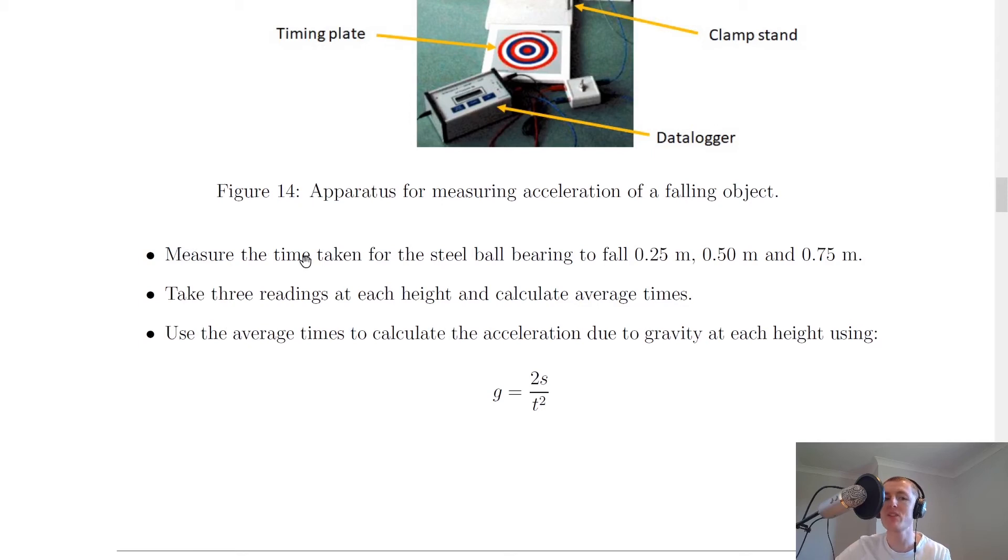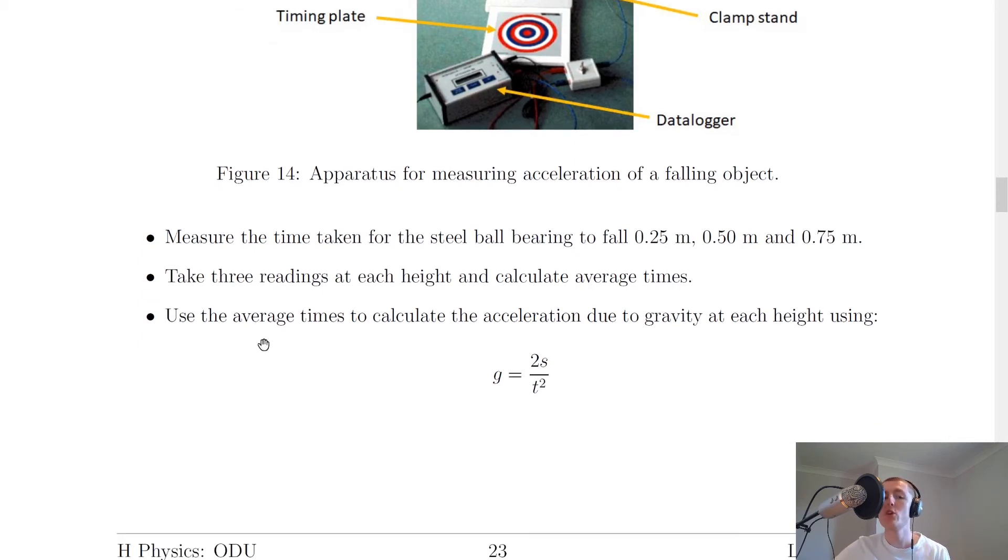So it says firstly to measure the time taken for the steel ball bearing to fall different heights or different distances. So I've chosen 0.25 meters, 0.50 meters, and 0.75 meters, three different heights, then says take three readings at each height and calculate average times. So from National 5 Physics, you should be familiar with repeating your experiment and taking an average. We then use the average times t to calculate the acceleration due to gravity g at each height s using this equation here.